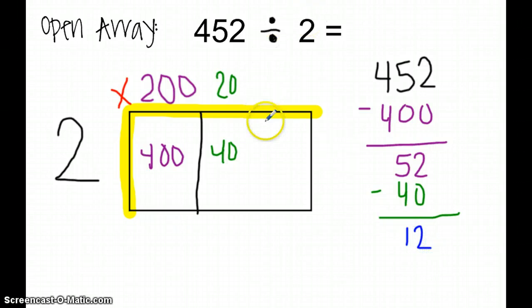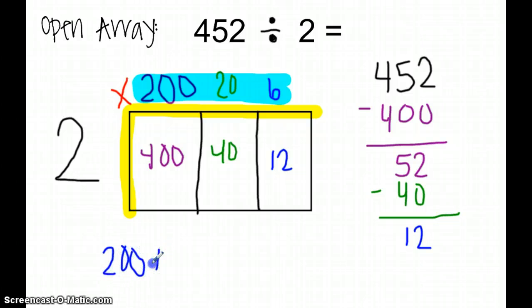If I know my multiplication facts, I know off the top of my head that 2 times 6 equals 12. I am going to use my open array to find the answer to 452 divided by 2. My answer can be found at the very top of my open array. I am going to take 200 plus 20 plus 6, which gives me 226.